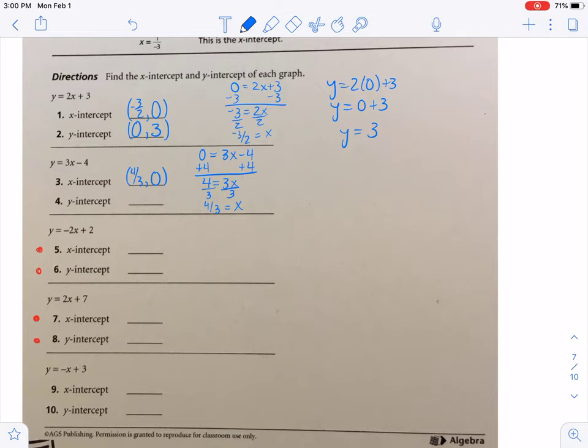Then we have (0, something). Put in 0 for x. So y = 3(0) - 4, which gives y = 0 - 4, so y = -4.